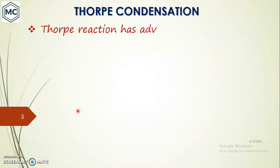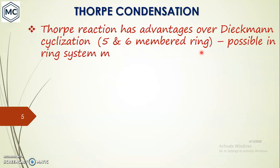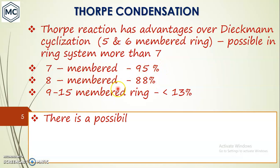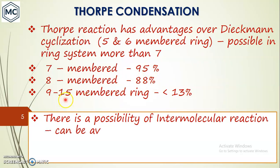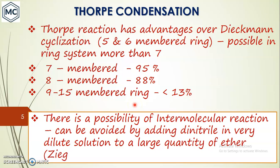The Thorpe reaction has advantages over the Dieckmann reaction because Dieckmann cyclization is only possible for five- and six-membered rings. But the Thorpe reaction is possible even for rings larger than five or six members. For seven-membered rings you get about 95%, for eight-membered rings about 85%, and for ring sizes between nine and fifteen the yield is lower. In Thorpe-Ziegler reaction there is a possibility of intermolecular side reaction.